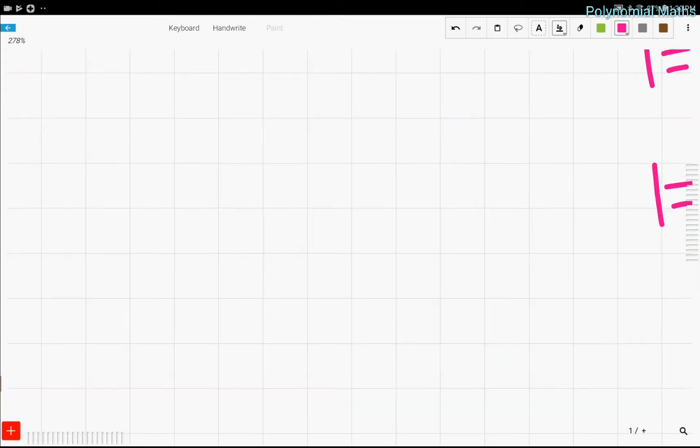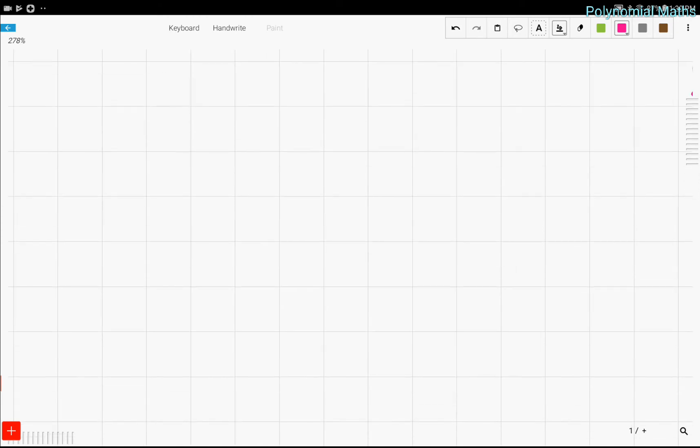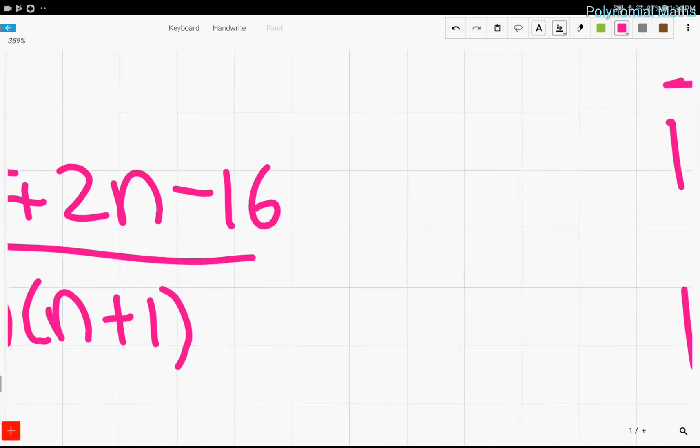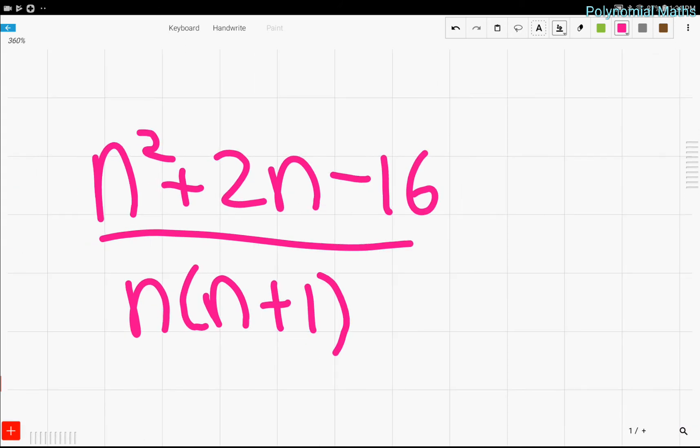So, now let's talk about some more complicated problems. For example, let's try solving n times (n plus 1). Actually, no. Now, how about n squared plus 2n minus 16 over n times (n plus 1). Again, n times (n plus 1) because that's pretty simple. So, how are we going to solve this?